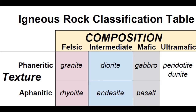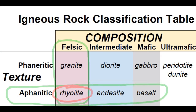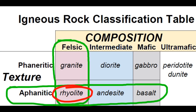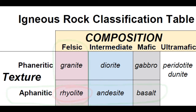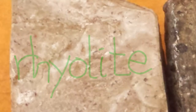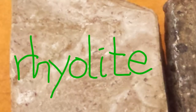In the igneous rock classification table, we find that an aphanitic, or fine-grained, rock of felsic composition is named rhyolite. Rhyolite is a felsic, aphanitic, igneous rock.